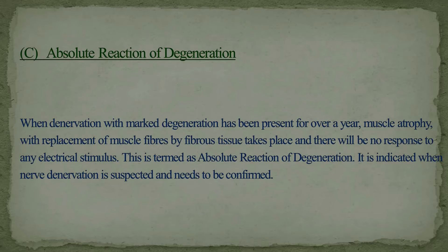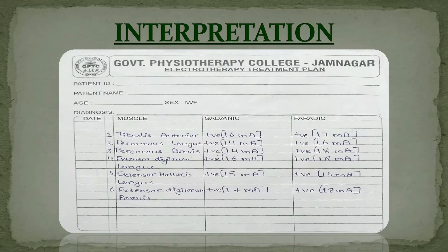Absolute reaction of degeneration is indicated when nerve degeneration is suspected and needs to be confirmed. Interpretation: muscle response to both IG and SF is visible for all muscles supplied by the common peroneal nerve. Therefore, the RD test for the common peroneal nerve is negative.